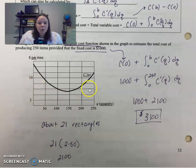So there's no better way to do it than counting your rectangles. So I counted about 21 rectangles under the curve here from zero to 250. And then it looks like each rectangle is two by 50. So that's what this is. That's the area of one rectangle.